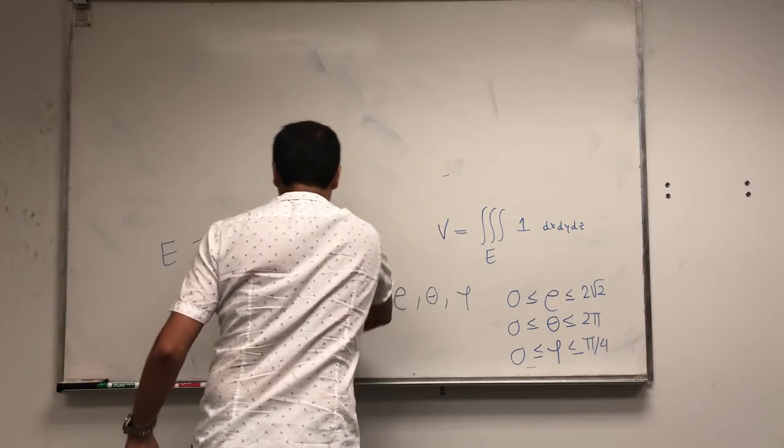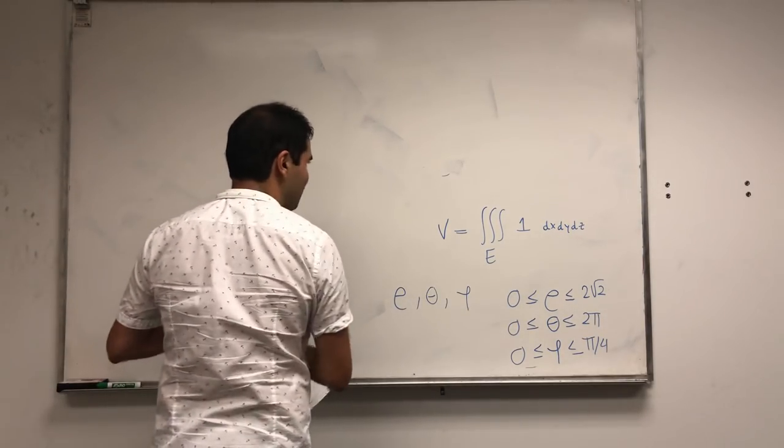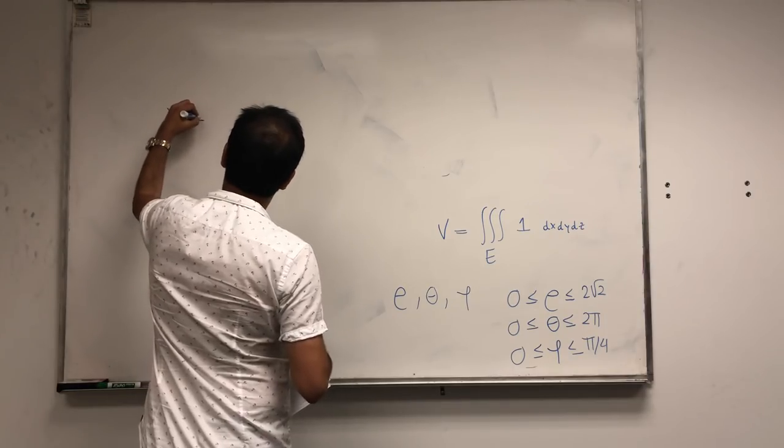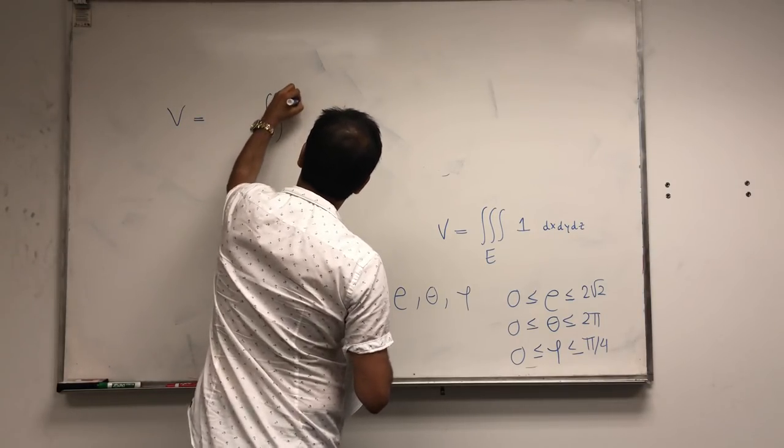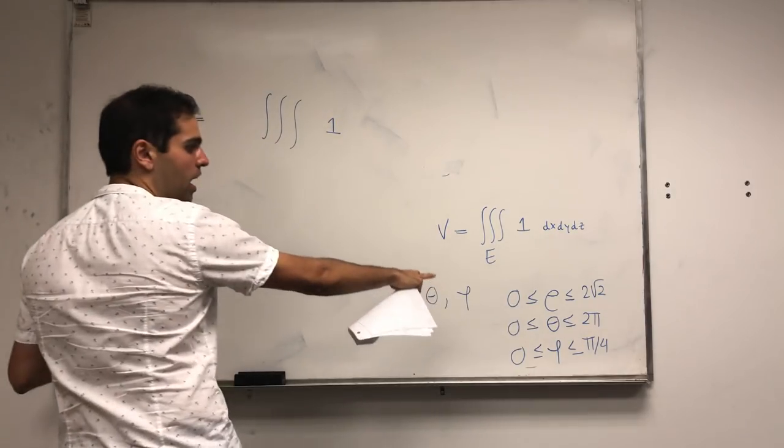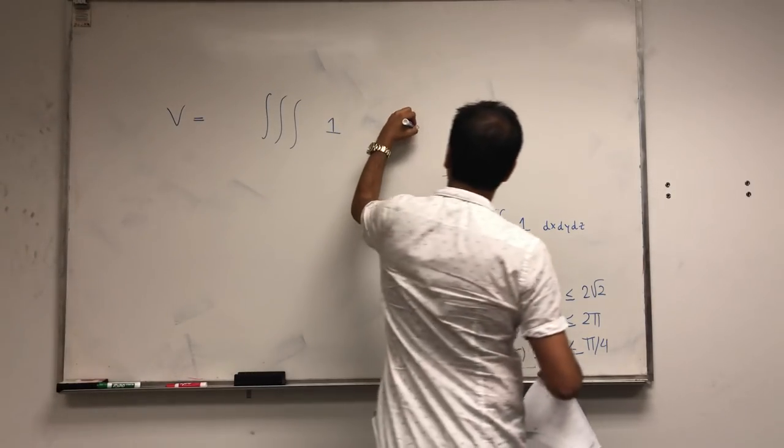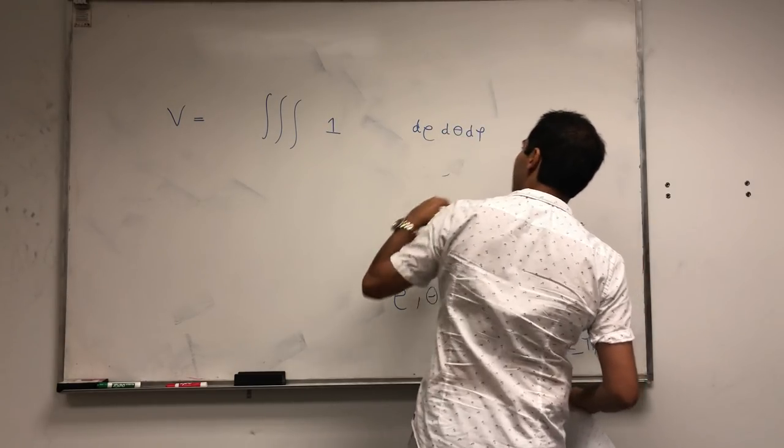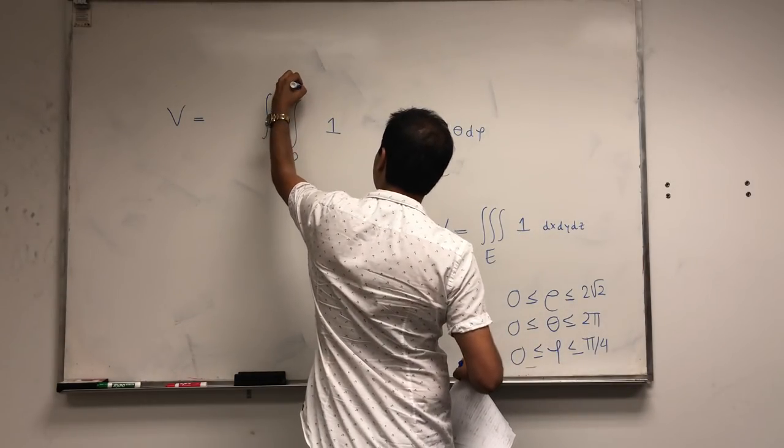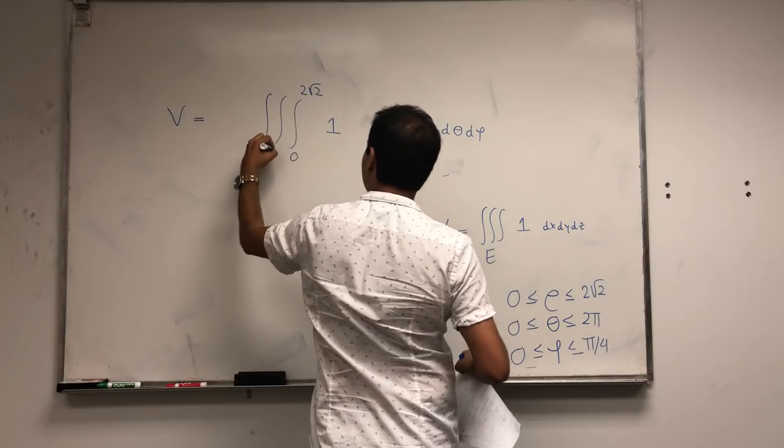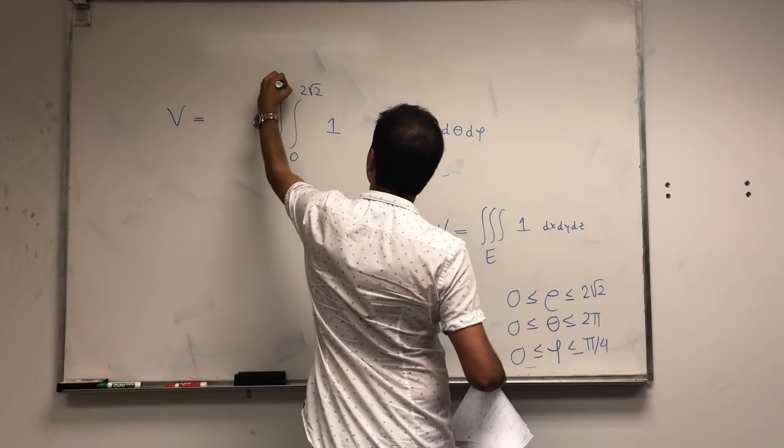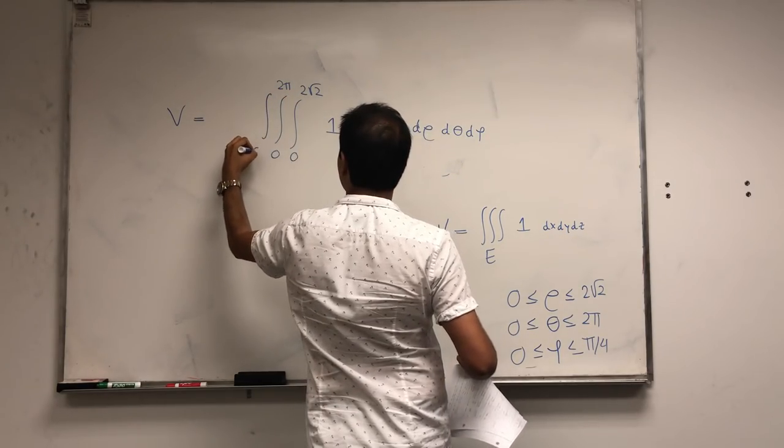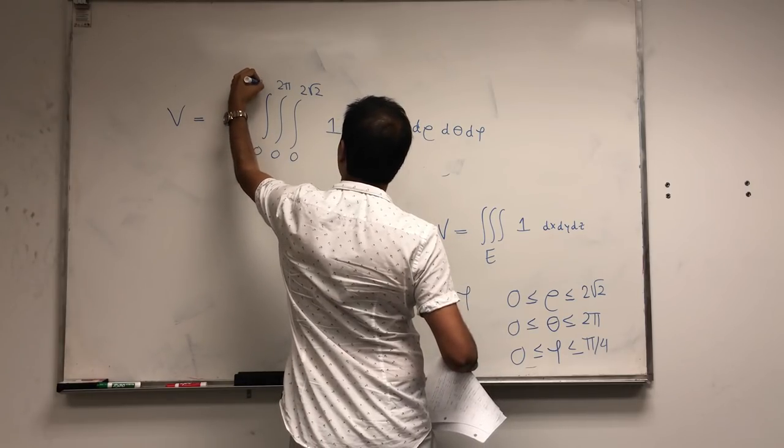So let's just simplify this. So volume in this case is the triple integral of one. But now let's do our d rho d theta d phi. Rho we saw is between zero and two square root of two, theta between zero and two pi, and phi between zero and pi over four.